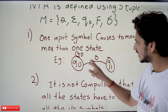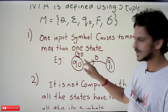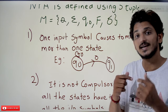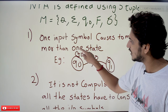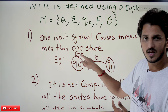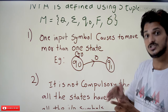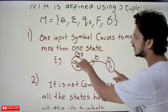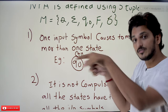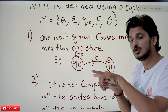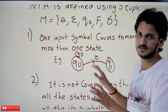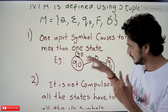In NFA, on applying input symbol 0 we are moving to both Q0 and Q1. So where do you apply the second input symbol? The second input symbol should be applied on both Q0 and Q1, because the previous symbol 0 moved us to both those states. Whenever we are moving to two different states, the next input symbol must be applied on both states. This is how NFA works — remember this point.